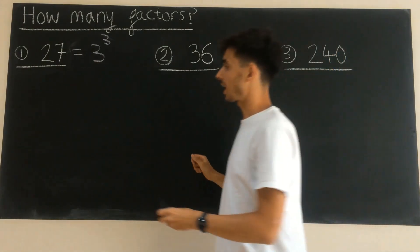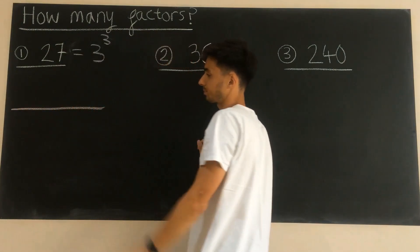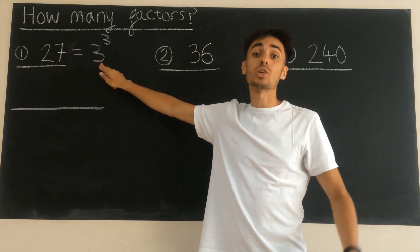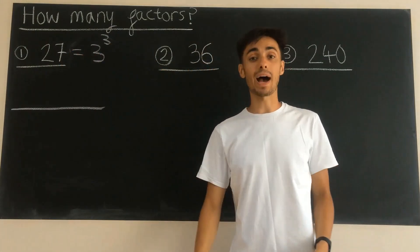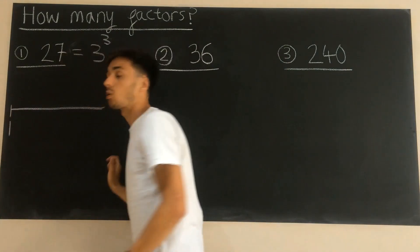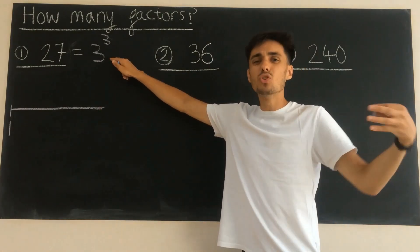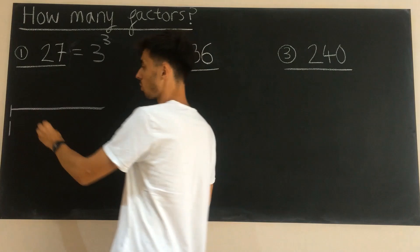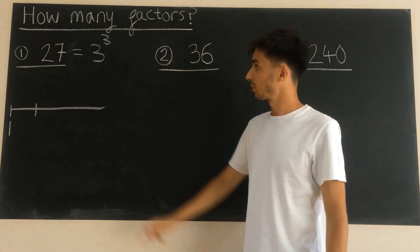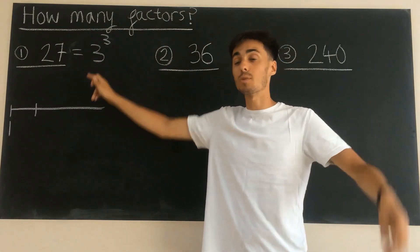So first thing, we always want to draw a number line. For 27 it's got one prime factor which is 3 and there's 3 powers of it. Our number lines always need to start with 1. But this isn't quite a normal number line. Each time we go along one jump in our number line, we're going to be multiplying, and because we've got 3 as our base we need to multiply by 3.